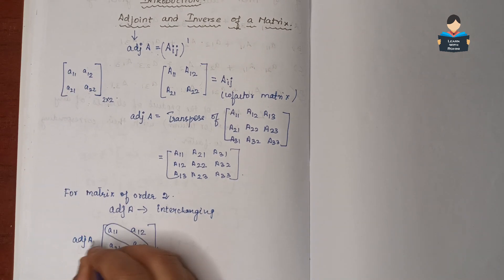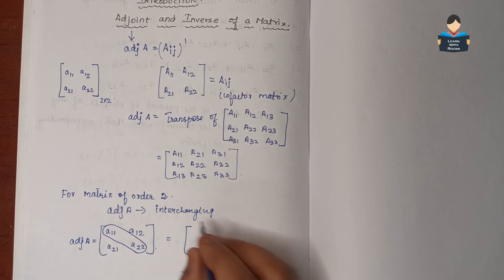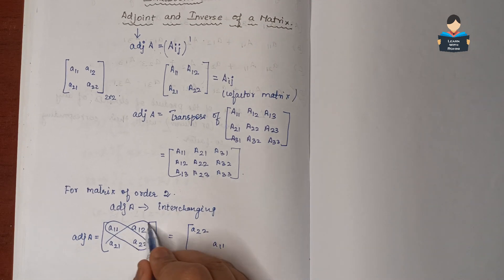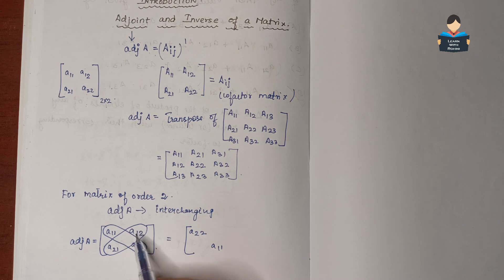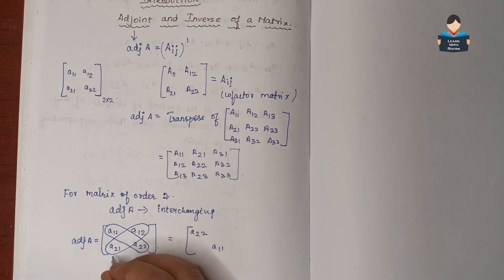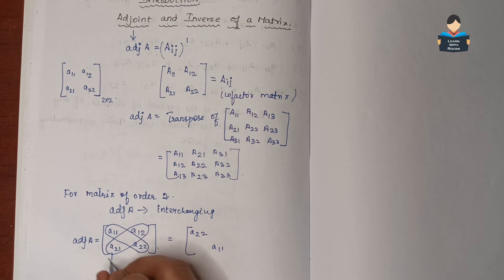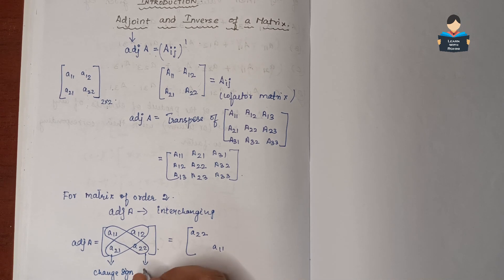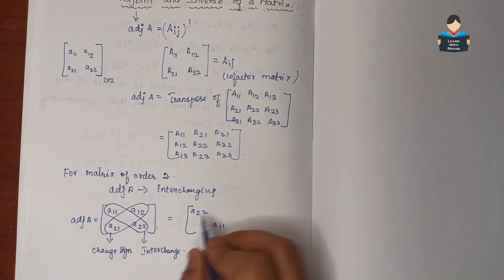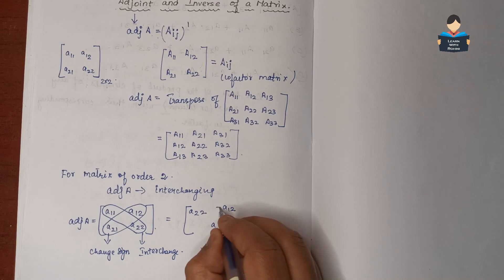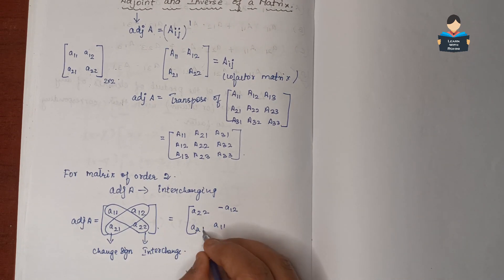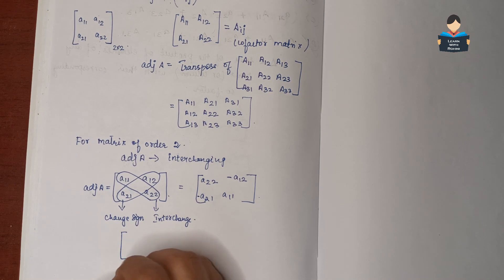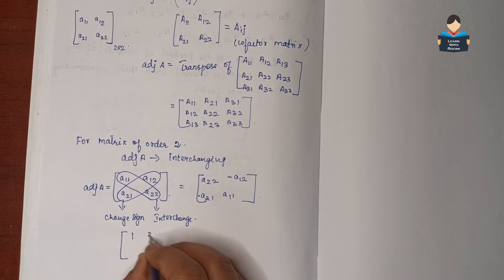The adjoint of A for a 2x2 matrix equals: interchange A11 and A22, and change the signs of A12 and A21. For example, given a 2x2 matrix [1, 2; 3, 4], we apply this method to find the adjoint.